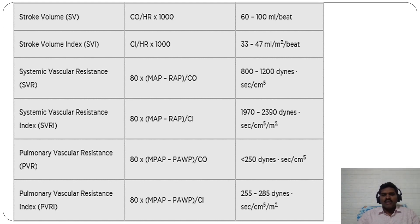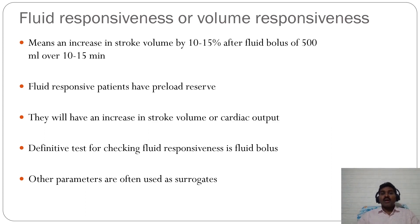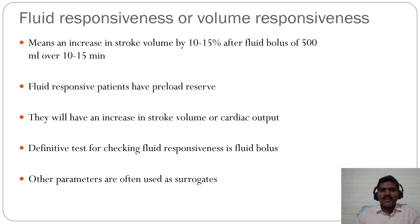Pulmonary vascular resistance index = 80 × (mPAP − PAWP) / cardiac index = 252–285 dynes·s/cm⁵/m². Fluid responsiveness or volume responsiveness means an increase in stroke volume by about 10–15% after a fluid bolus of 500 mL given rapidly over 10–15 minutes. If stroke volume or blood pressure increases by 10–15%, the patient is fluid-responsive and can receive additional fluids. A fluid-responsive patient has preload reserve — increasing preload will improve hemodynamics and tissue perfusion. The definitive test is a fluid bolus test, though other parameters are used as surrogates.